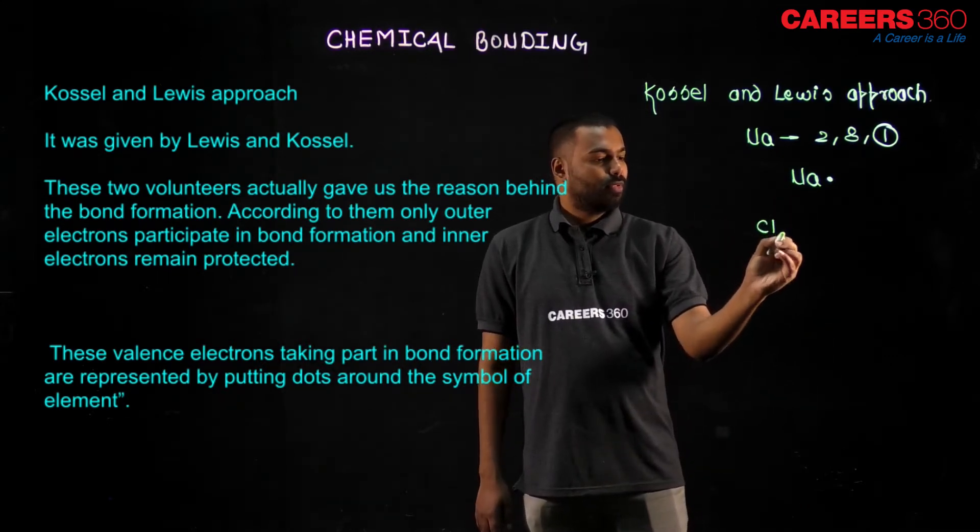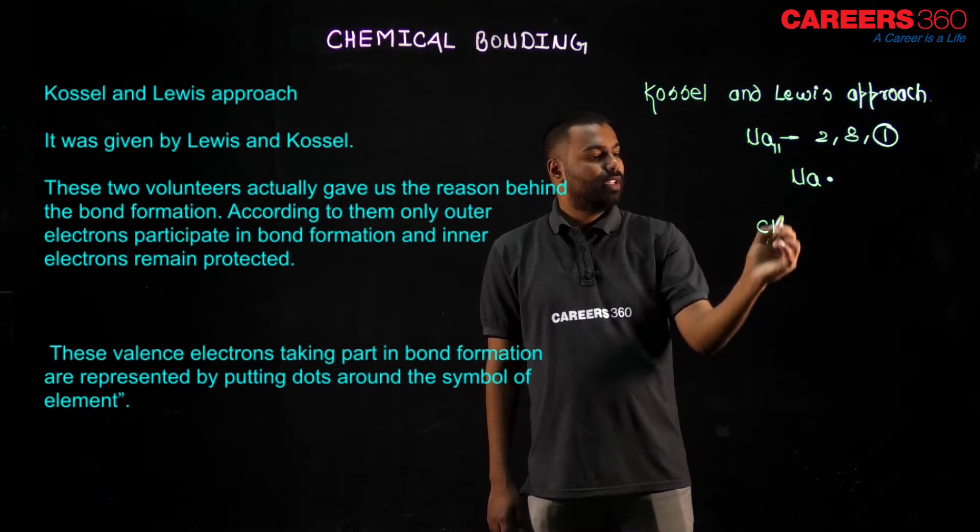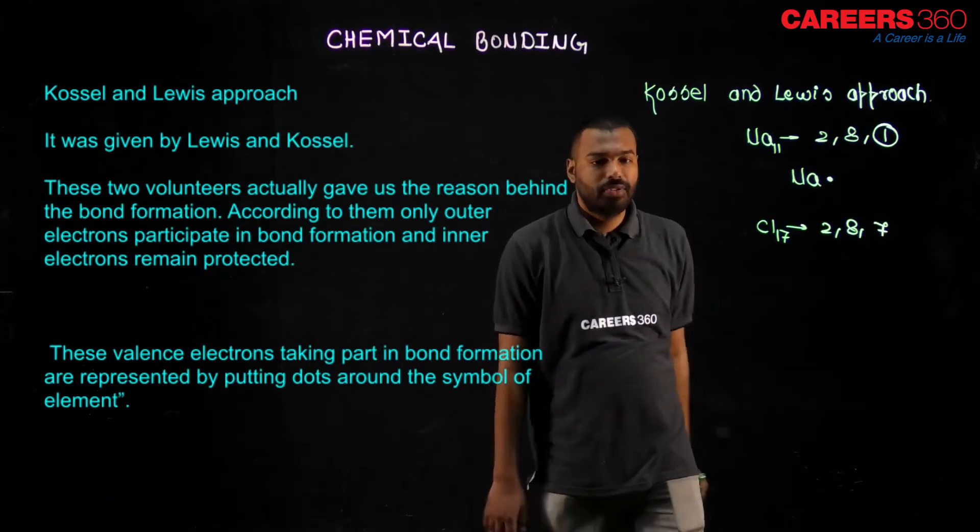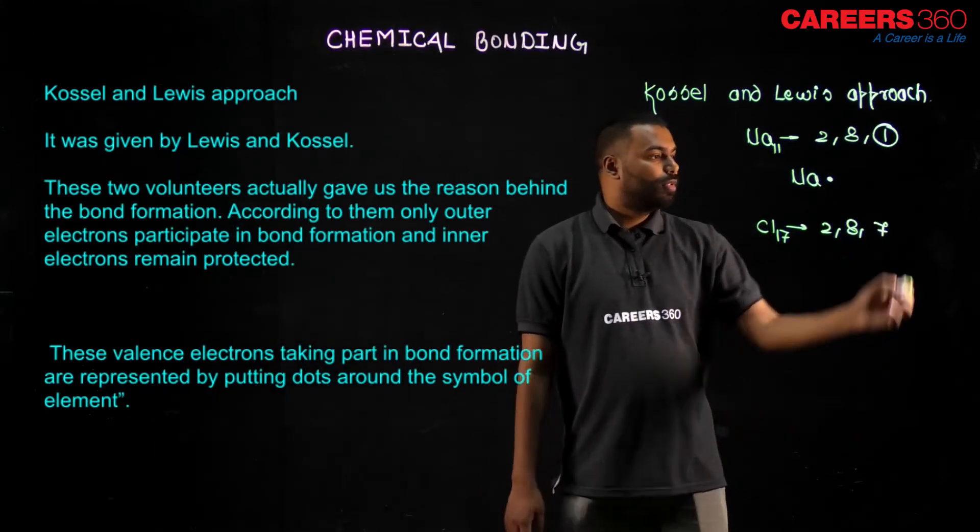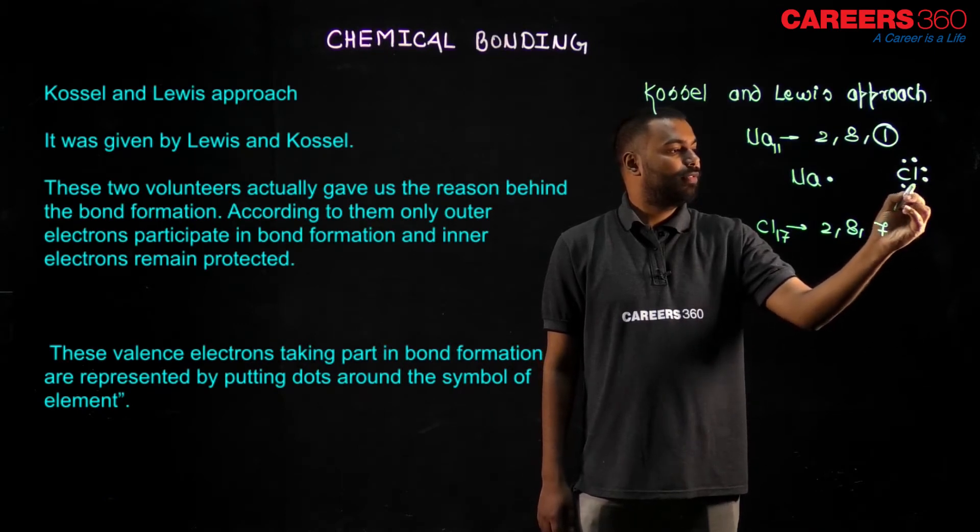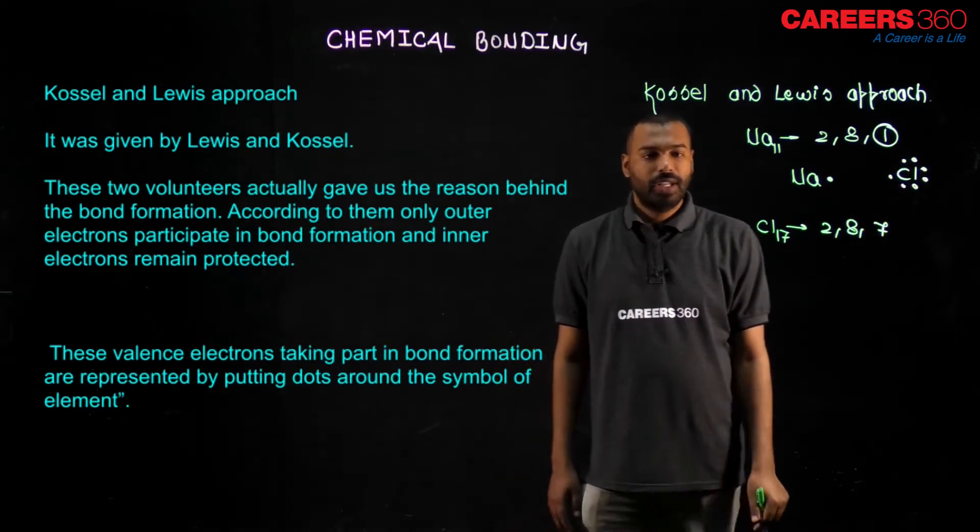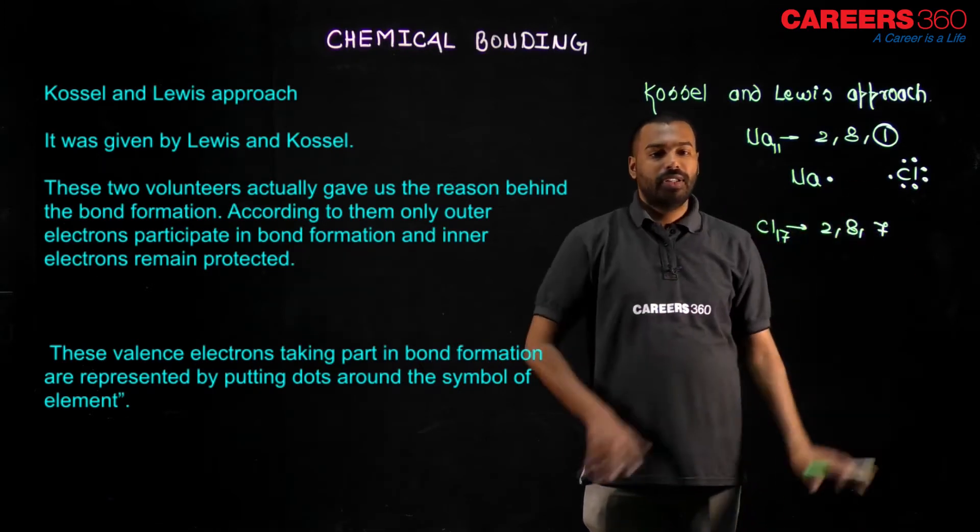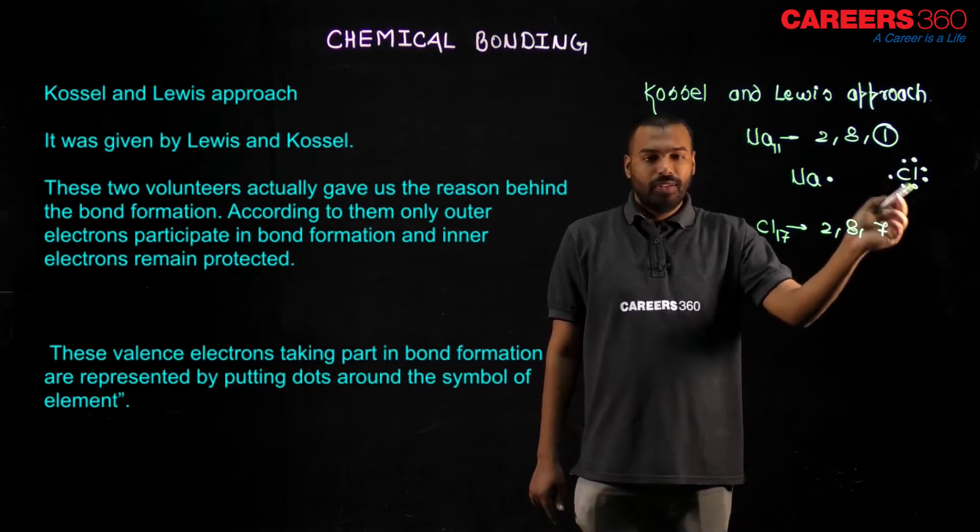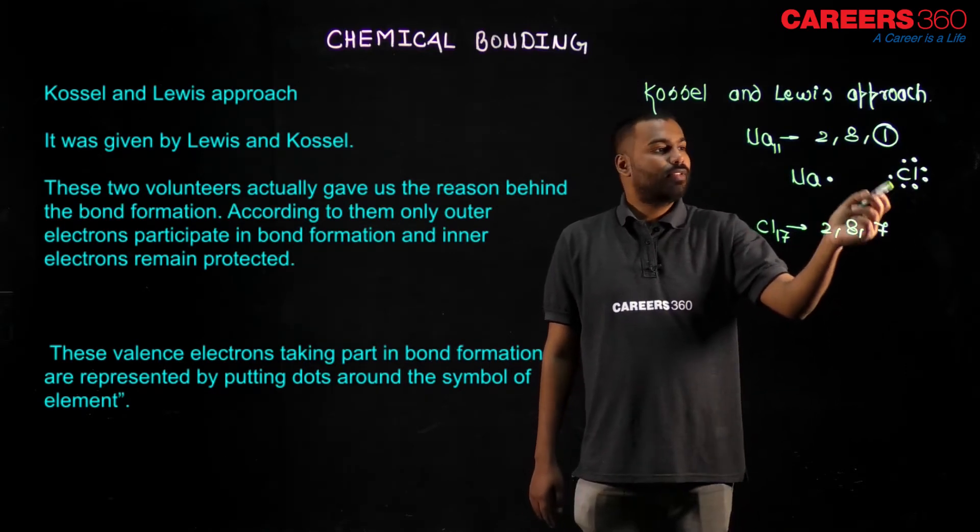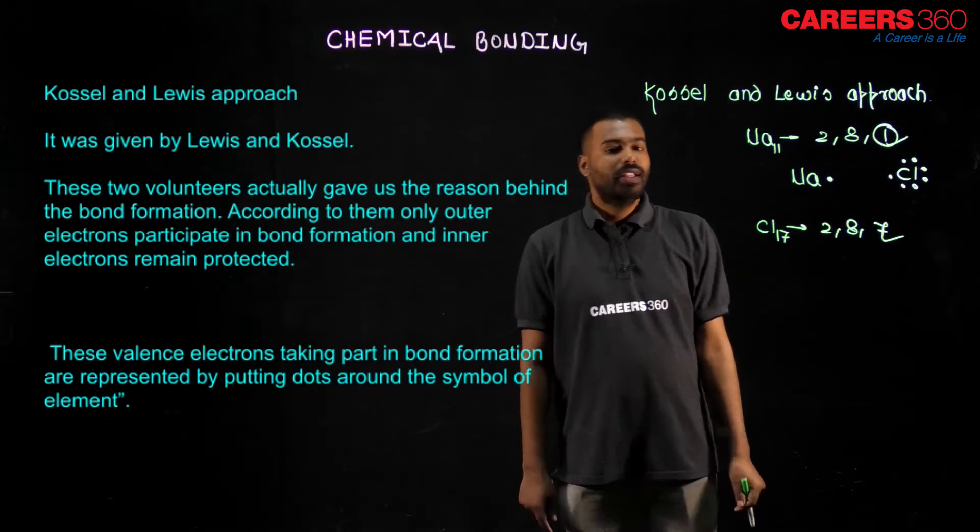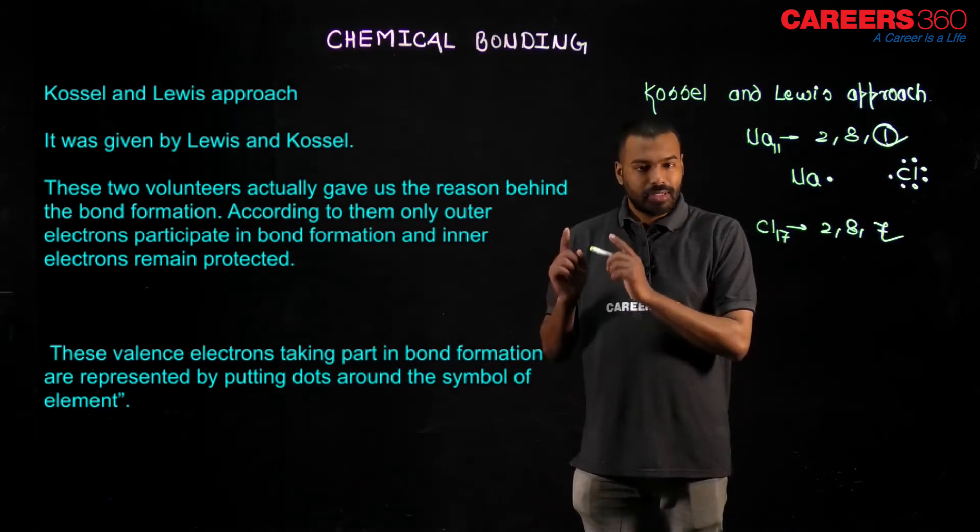If I talk about chlorine, suppose Cl17 Na11, then it is 2, 8, 7. Seven electrons in the valence shell. So chlorine 1, 2, 3, 4, 5, 6, 7. This is called Lewis dot structure. Very simple. Putting dots around the symbol and how many dots? Dots equal to valence electron. Let us see some Lewis dot structure examples now.